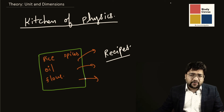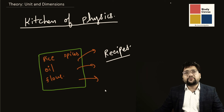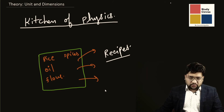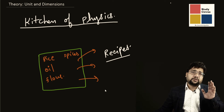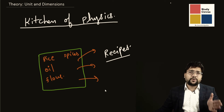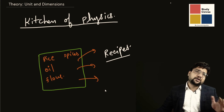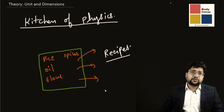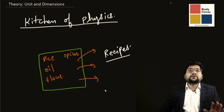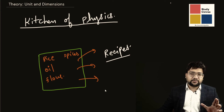We have a kitchen where we have seven fundamental quantities — seven ingredients — and using them we can define everything in physics. Whatever you have heard about — force, momentum, torque, magnetic field, electric field, dipole moment — everything can be explained and understood using these seven fundamental physical quantities.